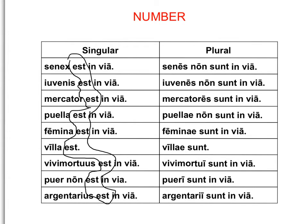Now we're learning, as you can see in the right column, that when you have more than one person as the subject of the verb of being, we change the verb to sunt. So over here, we have sunt for all of these. Another way of saying this is that est is the verb "is," and sunt means "are." Let's take a peek at a couple of these examples here.